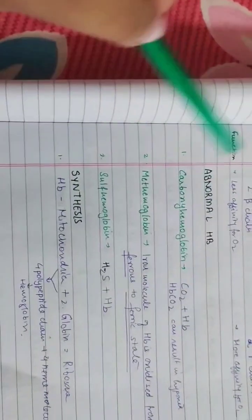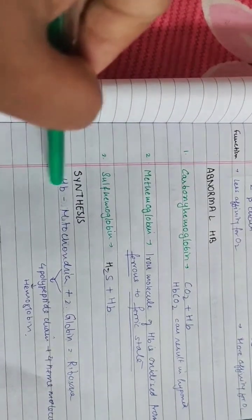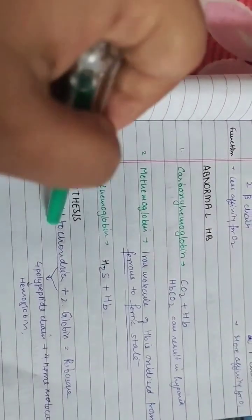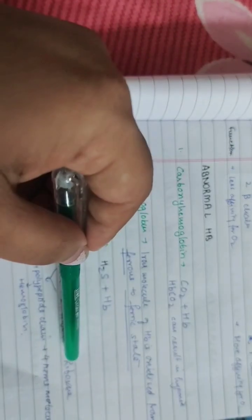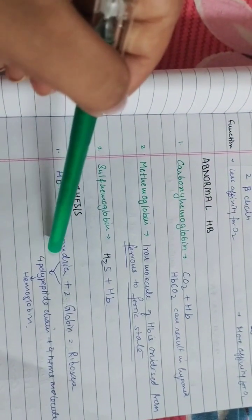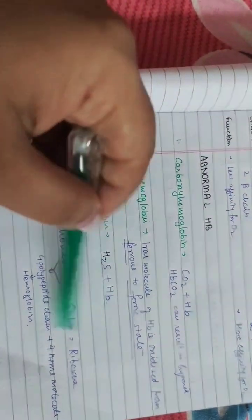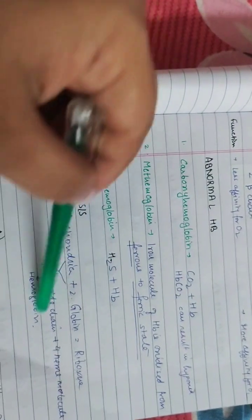Hemoglobin synthesis: The heme part is synthesized in mitochondria. The globin is synthesized in ribosomes. Both combine to form 4 polypeptide chains of globin and 4 heme molecules, which together form hemoglobin.